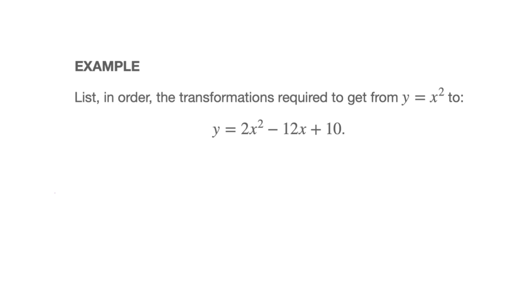In this video, we're going to learn how to list in order the transformations required to get from y equals x squared — the parent parabola — to y equals 2x squared minus 12x plus 10. The method we'll learn here will work every single time we need to list the transformations to get from y equals x squared to any parabola.